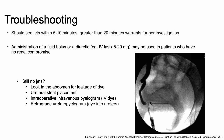You should see jets within 5 to 10 minutes; greater than 20 minutes warrants further investigation. You could administer a small fluid bolus or a diuretic like IV Lasix — 5 to 20 mg — but be cautious in patients with renal compromise. If you still do not see ureteral jets, and you are doing a laparoscopic or abdominal hysterectomy, you can look into the abdomen for leakage of dye. You can also place a ureteral stent, which should pass easily if there is no injury. Note that thermal injuries would not be identified by any of these methods.